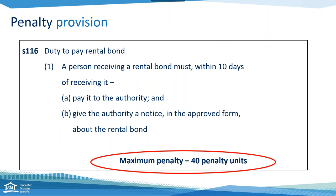If you look at the legislation you can identify offences by the penalty units attached — where it says 'maximum penalty is 40 penalty units.' The penalty unit increases slightly every year; the current penalty unit is $133.45. So under section 116, which is a duty to pay a rental bond, the maximum amount if the matter was prosecuted through the criminal courts for an individual would be 40 times that penalty unit — currently $5,338.